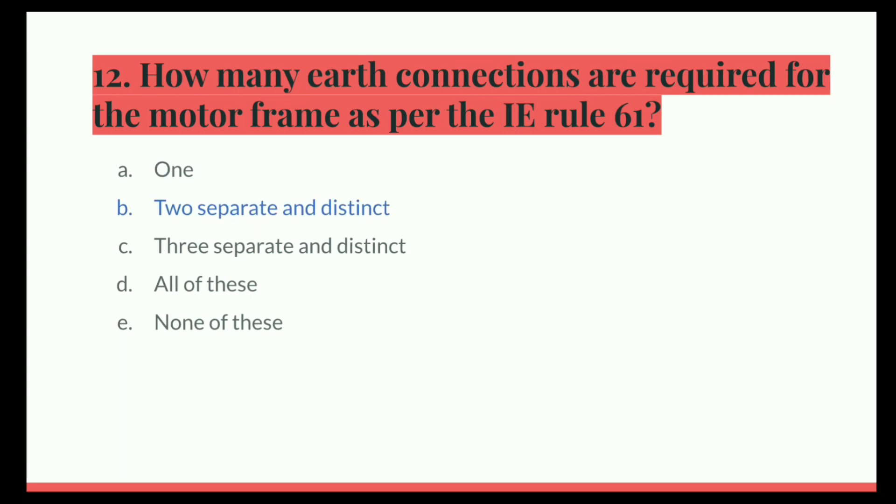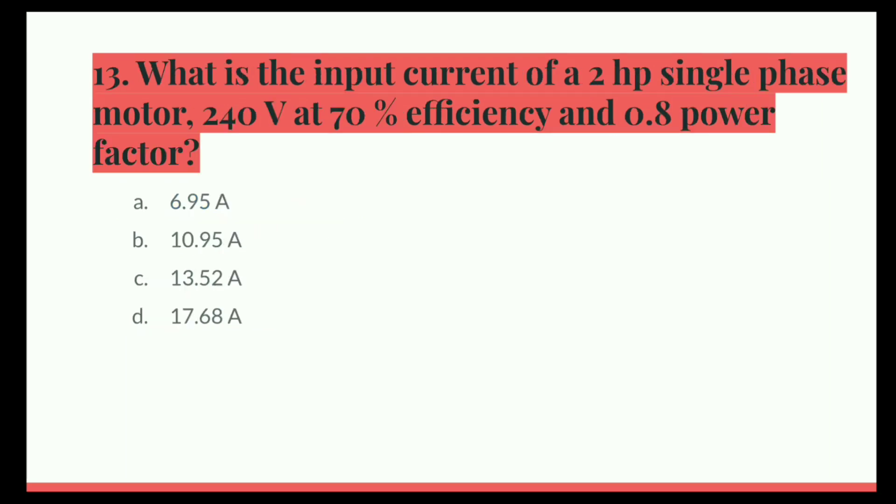Next question. What is the input current of a 2 horsepower single phase motor, 240 volt at 70 percent efficiency and 0.8 power factor? Option A, 6.95 ampere. B, 10.95 ampere. C, 13.52 ampere. D, 17.68 ampere. And the correct answer is 10.95 ampere.